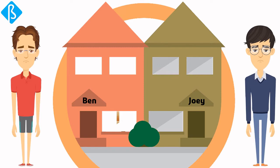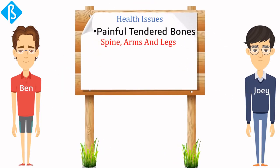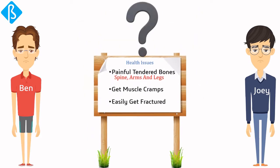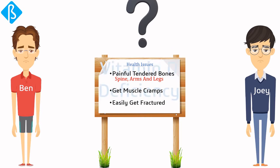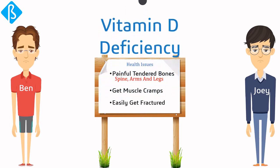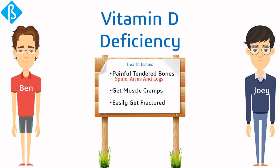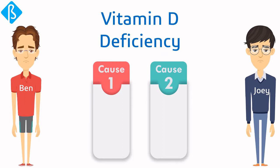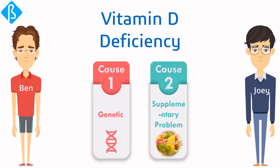Let's understand the situation. This is Ben and this is Joey, neighbors of each other, but both of them have some health issues — they have painful, tender bones especially in the spine, arms, and legs. They get muscle cramps and easily get fractures. Can you spot the issue? Of course you can — it's vitamin D deficiency. But do you know the deficiency could be due to many reasons? It could be genetic or it could be a supplementary problem.